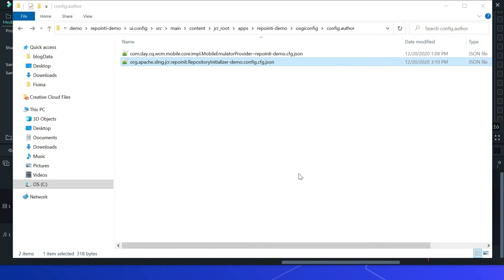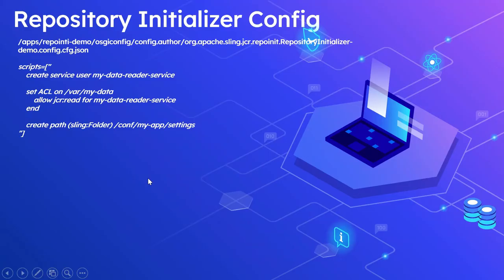It can be targeted for specific run modes to define run mode specific repo init configurations. Here I am enabling the configuration only for author run mode. This is the sample configuration for author run mode: osgi-config.author, then the PID — repository initializer — demo.config.cfg.json. These are all the sample scripts — creating a service user, then setting ACL on /var/mydata for this specific user created in the script.